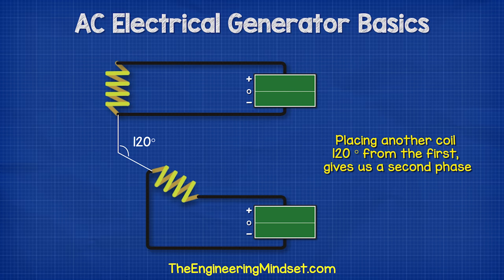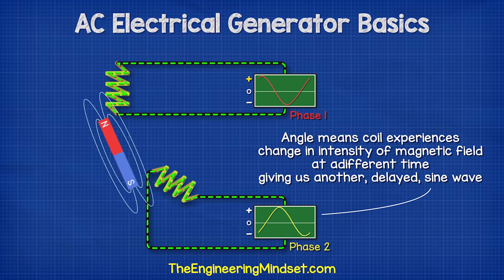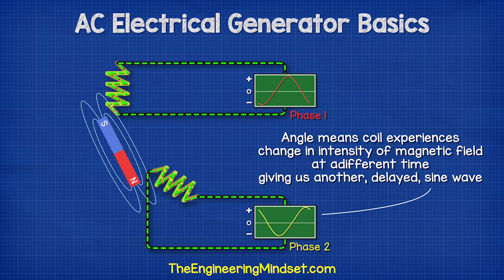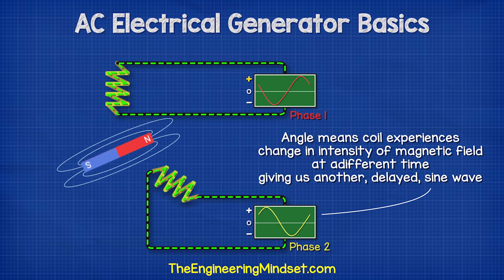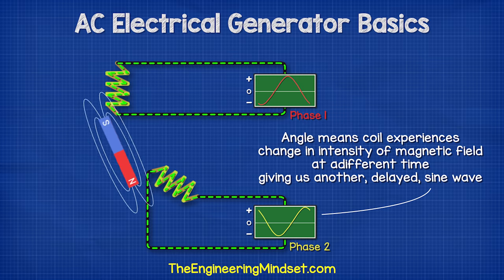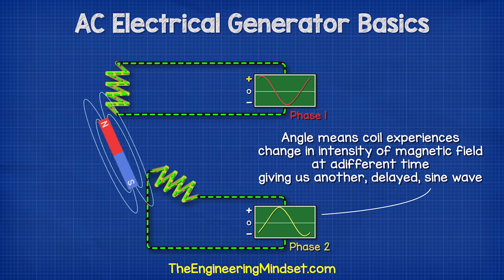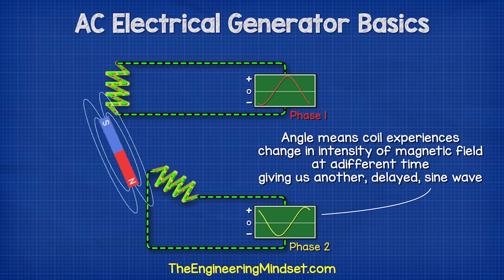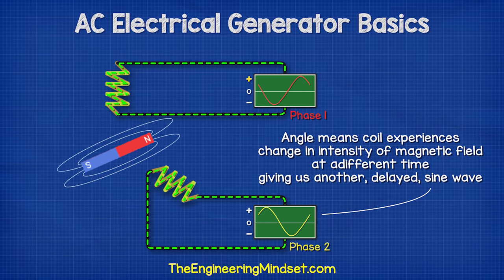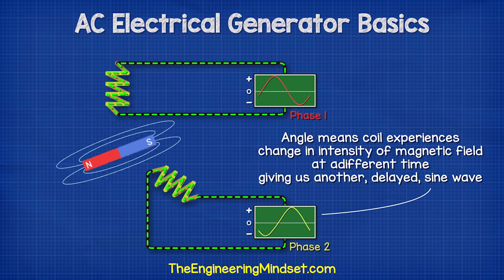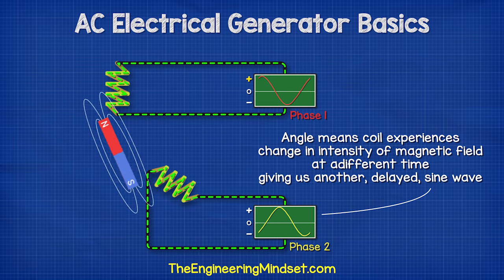If we place another coil 120 degrees rotation from the first phase, this will give us a second phase. Because the coil is at a different angle, it will experience the change in intensity of the magnetic field at a different time. The current will therefore flow forwards and backwards at a different time, giving us another sine wave which occurs at a different time.